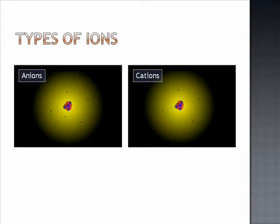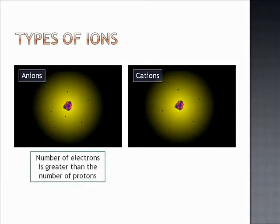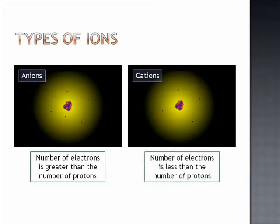As we can see in the picture of the anion, the electrons outnumber the protons. This is characteristic of anions where the number of electrons is always greater than the number of protons. Conversely, in the picture of the cation we see that the opposite is true. The protons outnumber the electrons. Again, this is characteristic of cations. The number of electrons is always less than the number of protons.